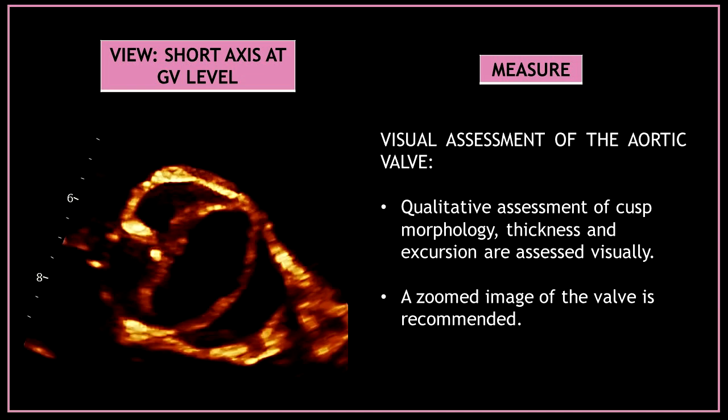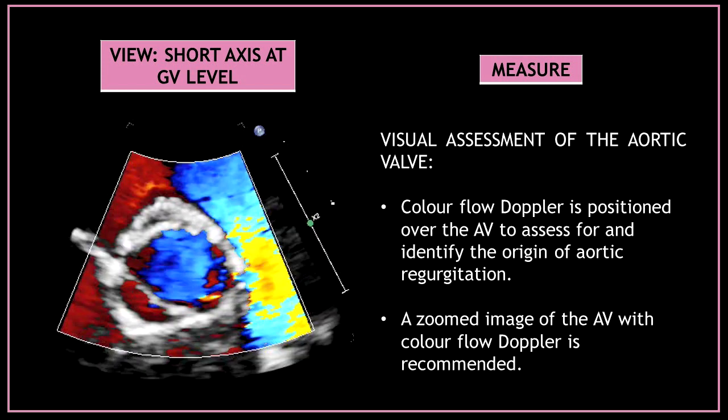Now start with the assessment of the aortic valve. A zoomed image of the valve is recommended. Perform a qualitative assessment of cusp morphology, thickness, and excursion. Place color flow Doppler over the aortic valve to assess for and identify the origin of aortic regurgitation. A zoomed image of the aortic valve with color flow Doppler is also recommended.